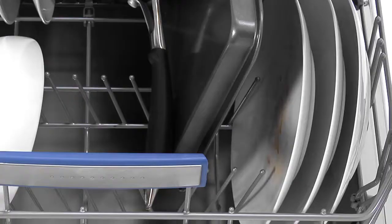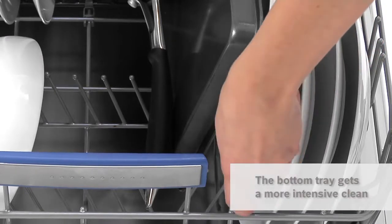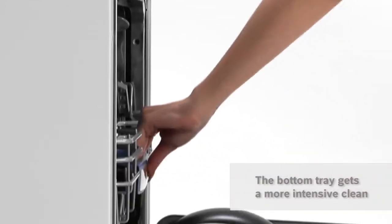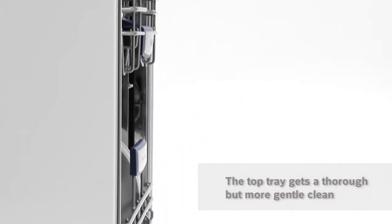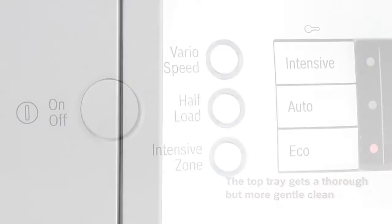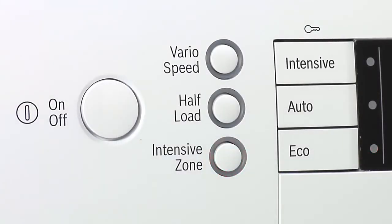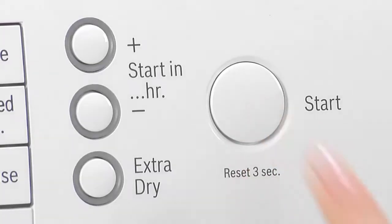Now the roasting tins, casserole dishes and other items in the bottom tray get a more intensive clean while the top tray's contents are washed thoroughly but more gently. So I can now load everything in one go and know it will all come out pristine and perfect.